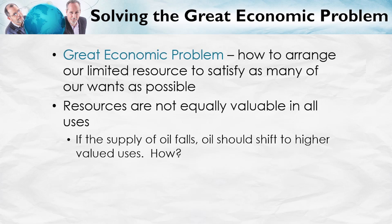If the supply of oil falls, we want oil to be shifted to higher valued uses. But which uses? How are we going to choose where to use less oil? We must use less oil somewhere, but where, and how are we going to make these decisions? There are a couple of possible methods: we could use a central planner, or we could use the price system.